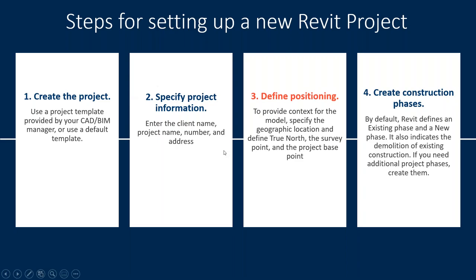We're going to start with project startup. Looking at the basic steps of setting up a new Revit project: first, you create a new project based on a standard Revit template, or one created by your BIM manager. Then you specify your project information - details like client name, project name, project number, and project address. The topic we're discussing today is defining your positioning, which provides context for your model: you specify the geographic location, define your true north, the survey point, and also the project base point. Also part of your setup is creating your construction phases - by default, Revit defines an existing phase and a new phase, and also indicates demolition of existing construction.